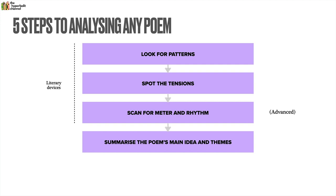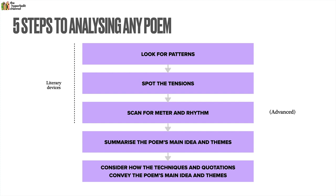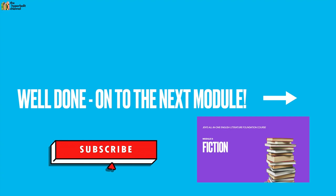Finally, we'll have to link it all together — we'll have to consider how the techniques and quotations convey the poem's main ideas and themes. Remember: techniques in literature — those literary devices — always ultimately serve to illuminate the themes of a poem. We can't just identify and point out techniques and think that's a done deal. We need to actually link them to the bigger messages and ideas conveyed in the poem. This is always about the relationship between techniques and themes: how do the techniques in the poem convey the key themes? Well done — that's it for this module. You can refer to the deck in your own time as a guide and reference whenever you are analyzing any literary or specifically poetry passages.